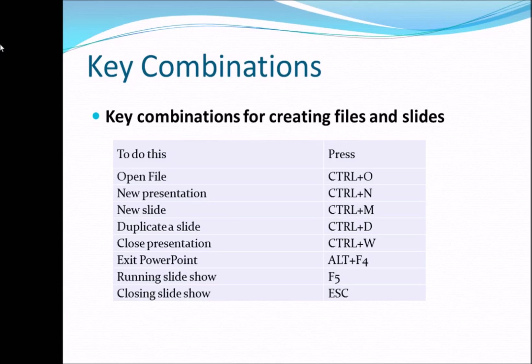Control plus W is the shortcut for closing the presentation window. The next one is exit PowerPoint. If you press Control plus W, only the presentation file is closed — not the entire software. You are still in the PowerPoint window but with no file open. To close PowerPoint itself, the application, you have to press Alt plus F4. Alt plus F4 is the combination for closing the software itself.